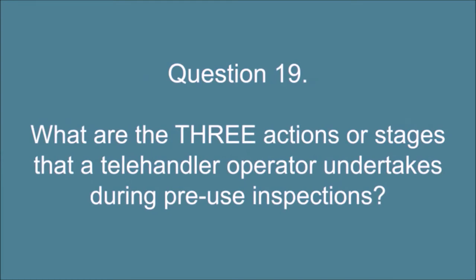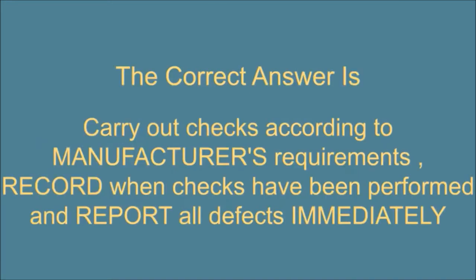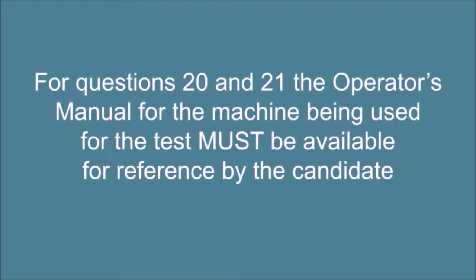Question 19. What are the three actions or stages that a telehandler operator undertakes during pre-use inspections? The correct answer is: Carry out checks according to manufacturer's requirements, record when checks have been performed, and report all defects immediately.